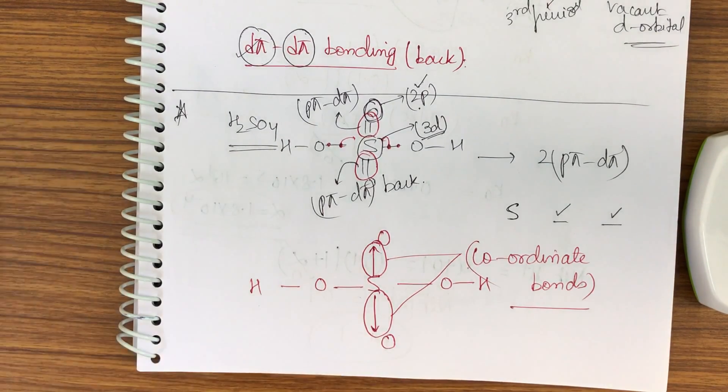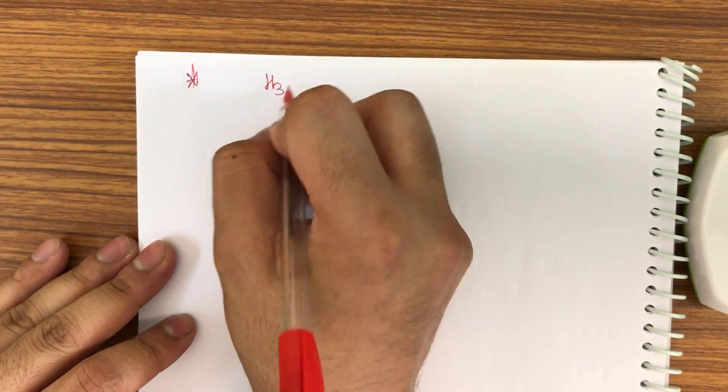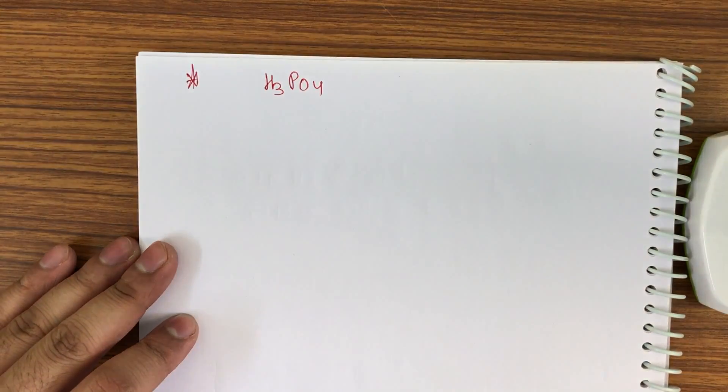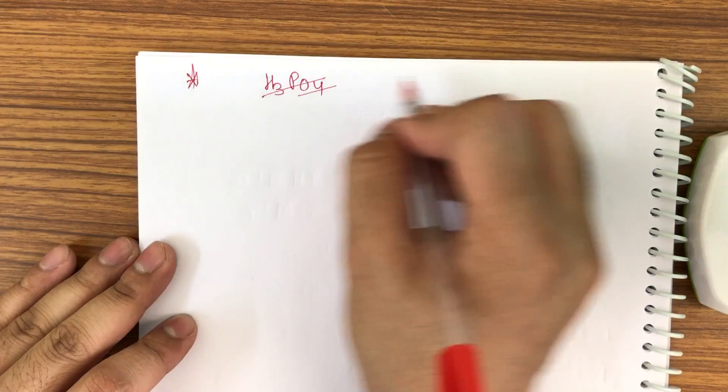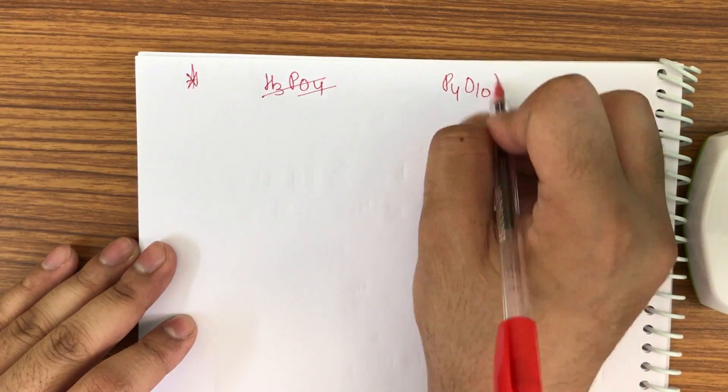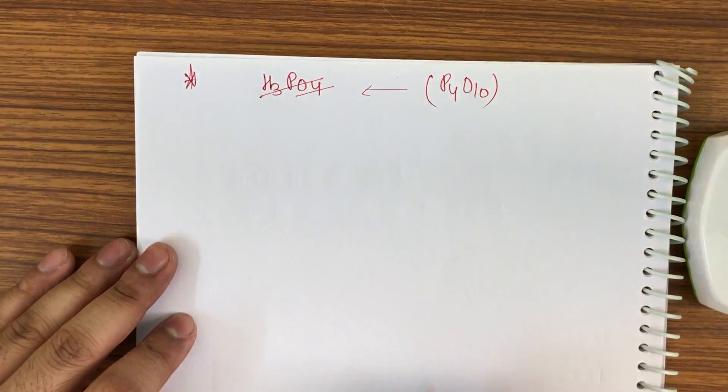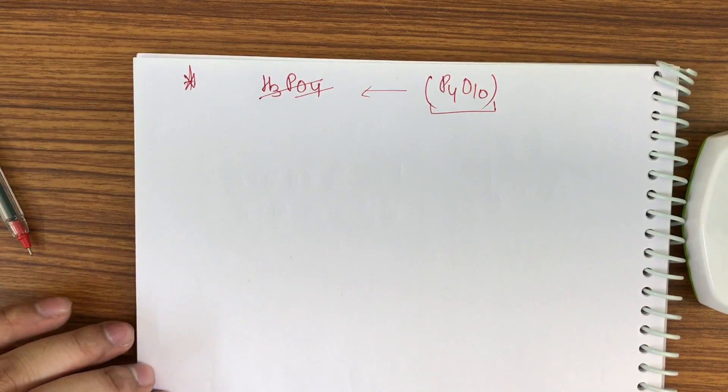Let me take one more example for it. Like I have H3PO4 - let me take P4O10 because on hydrolysis it will give this. So I'll take P4O10.